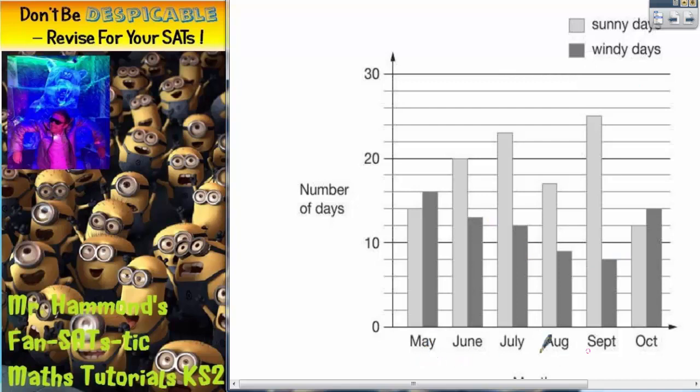We've got the months across the bottom: May, June, July, August, September, October, and we've got the number of days up the side.